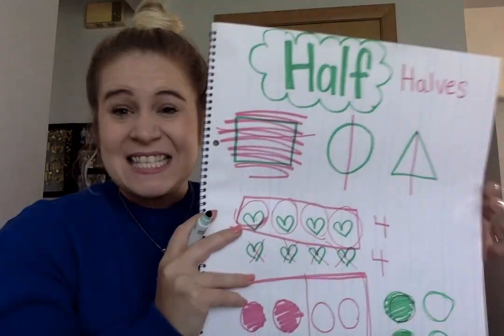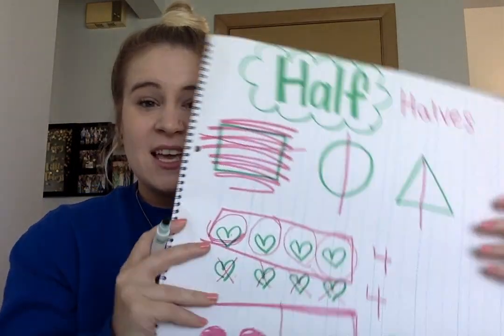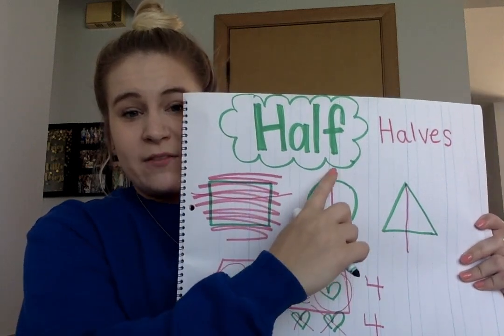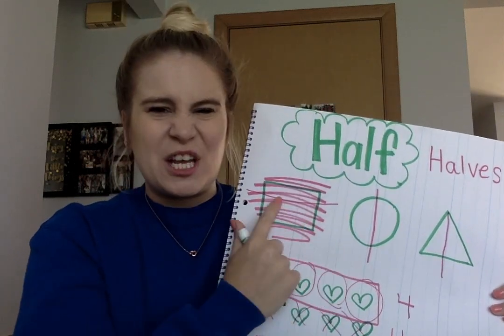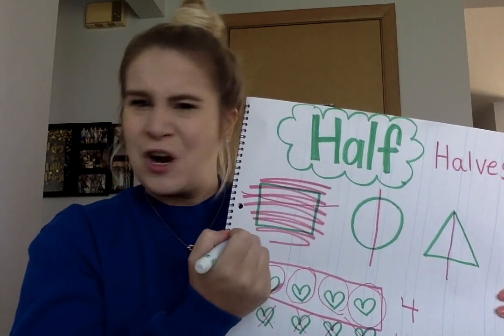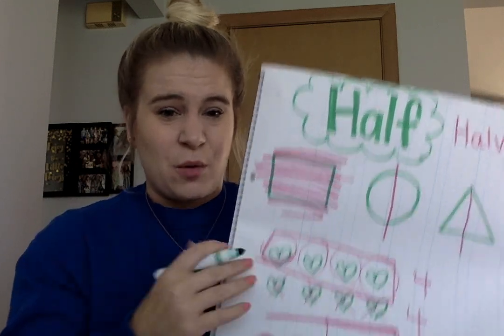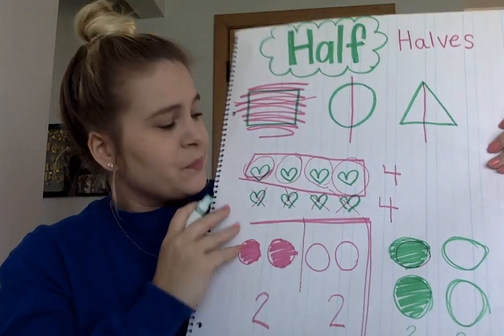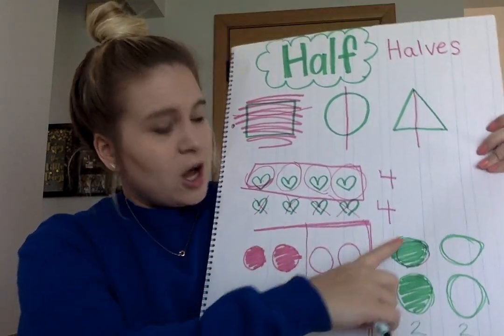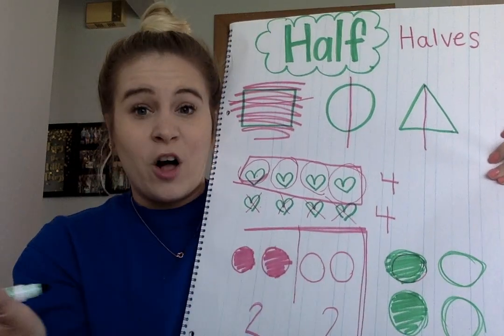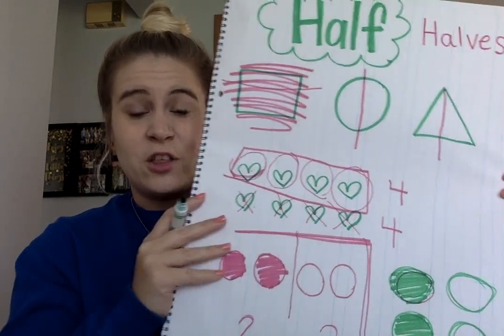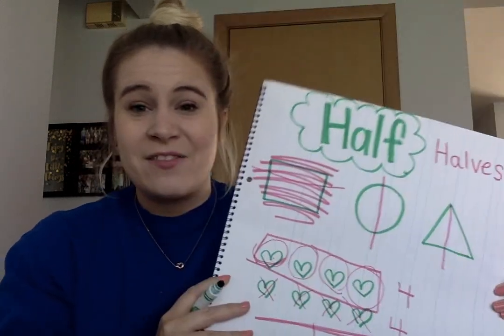Okay, first grade. On Seesaw, I sent you an activity. There's somewhere you have to draw the line to make half, somewhere you have to look at a picture and say yes, that shows half, or no, that's not fair, that doesn't show half — it's not even or equal. And then there's one where you have to color half of the hearts one color and the other half another color. Go to activities on Seesaw and work on that. I can't wait to see all your hard work. Good job, first grade.